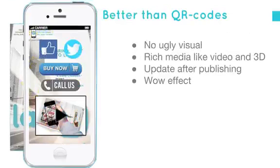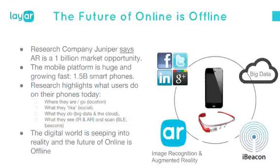For people familiar with QR codes — those black and white square codes — this is basically the next level up, and much better because you don't have that ugly black-and-white square. You get rich media: video, 3D on top of your magazine, postcard, business card, or poster. It's also dynamic — after publishing, every day or every hour you can have different content on top. And of course you get the wow effect — it jumps off the page and into your screen.